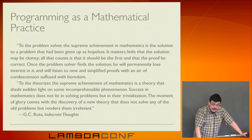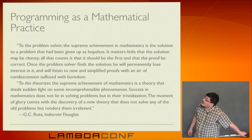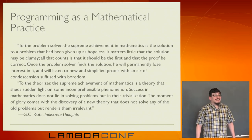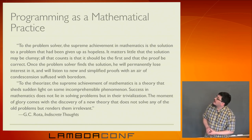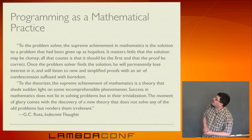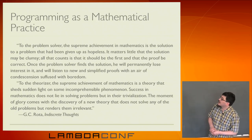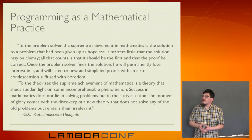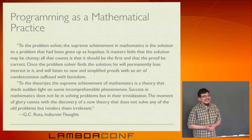Rota in Indiscreet Thoughts points out there are two sorts of mathematicians: the problem solver, who wants to solve problems no one else thinks can be solved, and once solved doesn't care how — on to the next. And then there are the theorizers, who don't really care about problems — they want a theory that sheds light on phenomena. 'Success does not lie in solving problems, but in trivializing them. The moment of glory comes with the discovery of a new theory that does not solve any of the old problems but renders them irrelevant' — and perhaps introduces a bunch of new problems. Rota is not taking sides. This should be very familiar to many of us in discussions about how we write software libraries.